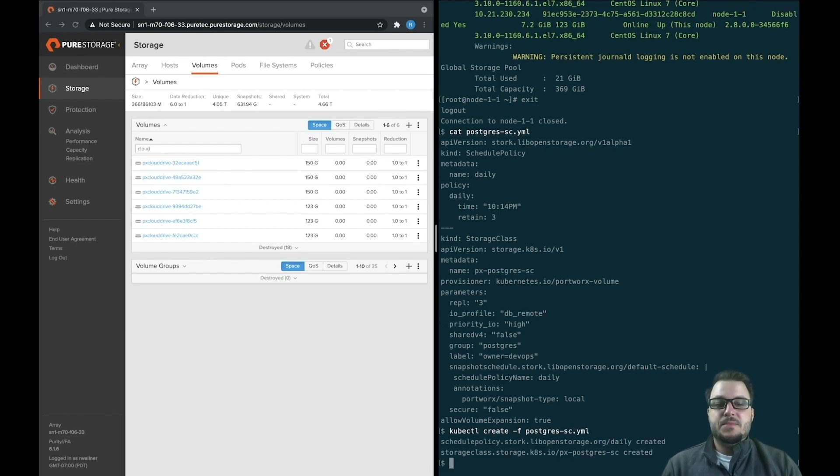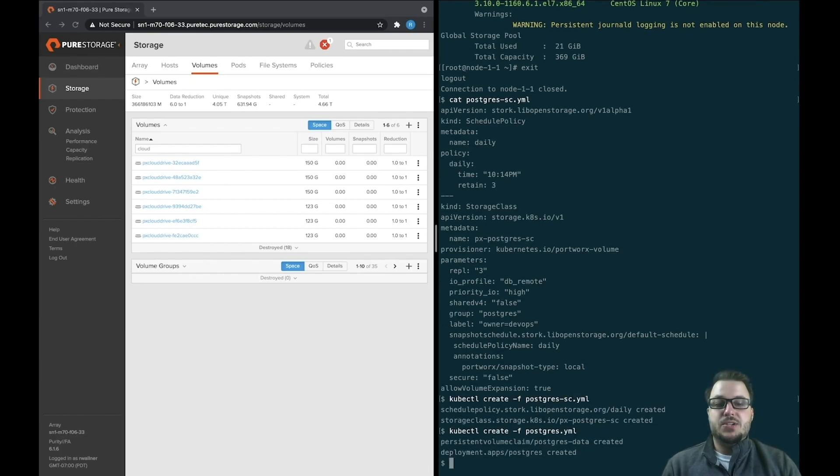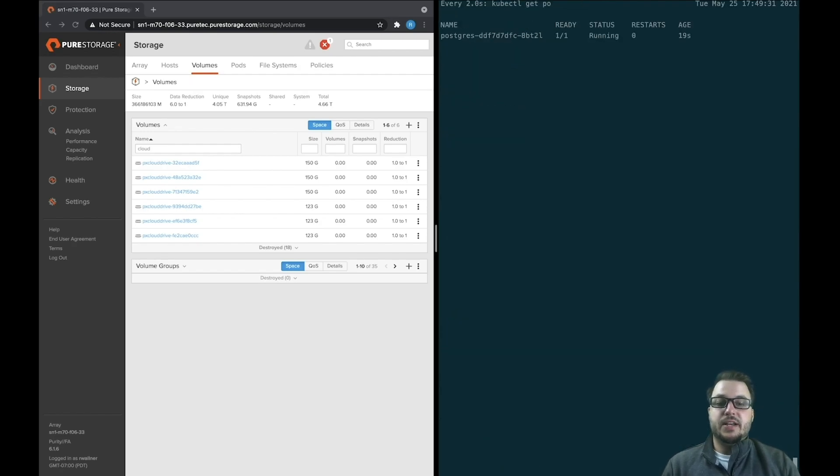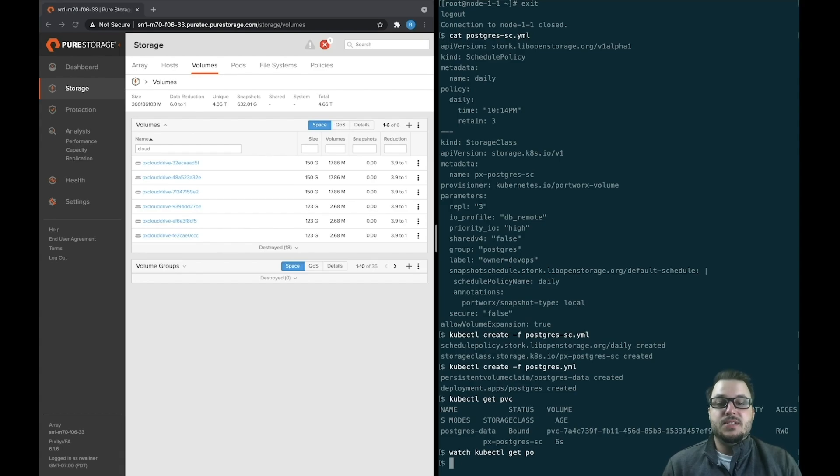Once this storage class exists, we go ahead and create it and then we provision an application. In this case, we're provisioning Postgres. Here we can see our bound volume, which is a virtual volume on top of our flash array environment. Postgres is up and running, so now we can use it.